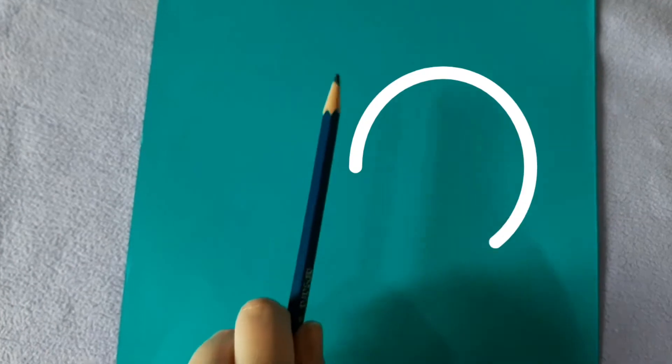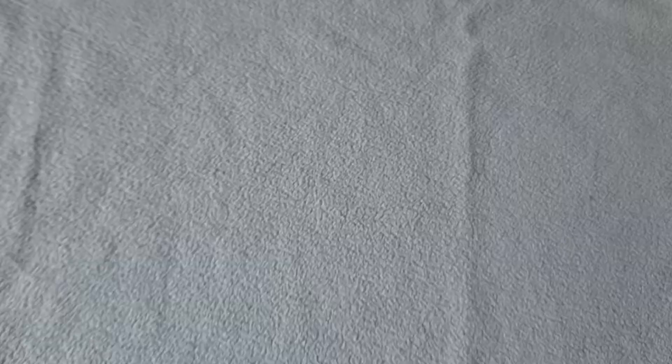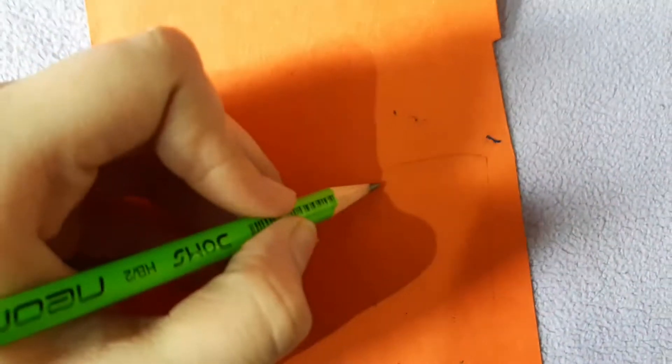Now take another sheet and draw the circle to the size of the cardboard. The size of the cardboard and the circle size should be the same, and with the help of scissors cut it down. Now take another sheet and draw the circle, but remember the circle of this sheet should be smaller than the previous sheet. Cut it down with the help of scissors.